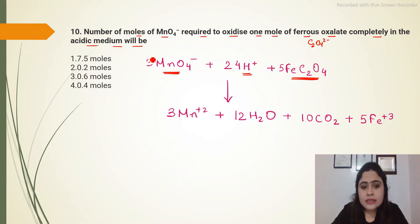Here you can see that 3 moles of MnO4- is required to oxidize 5 moles of FeC2O4, so I can write here that 3 moles of MnO4- is required to oxidize 5 moles of ferrous oxalate, FeC2O4.